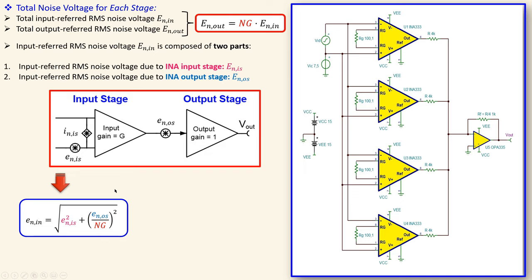For the total circuit, the output noise voltage of each stage is divided by the square root of the number of stages (√4 = 2), giving a total output RMS noise voltage of approximately 586 µV RMS. This will be verified in simulation.